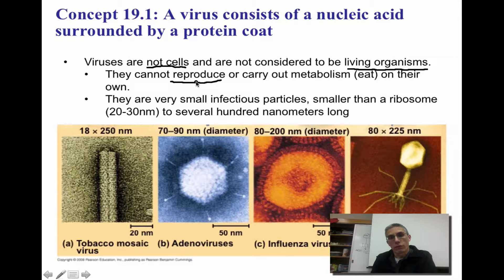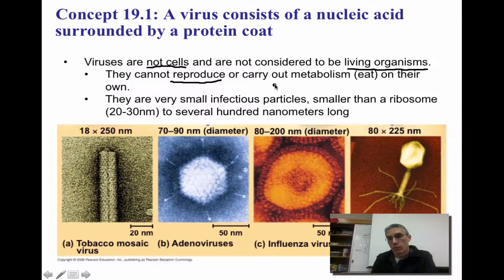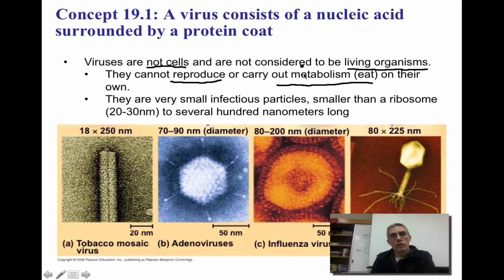In order for a virus to reproduce, it's going to need a host cell. So because it does not have that ability to reproduce on its own, it doesn't have one of those characteristics of life necessary to be considered alive. The second characteristic that it's missing is that it cannot carry out metabolism, which simply means it can't eat. So because it can't do either one of these things on its own, we do not put it into the category of living things.